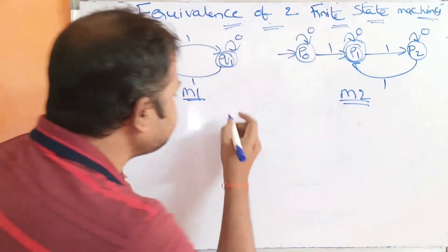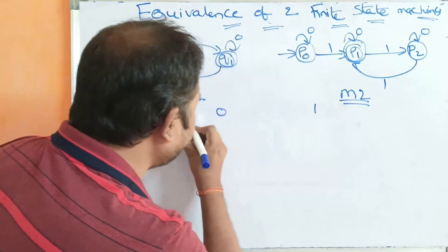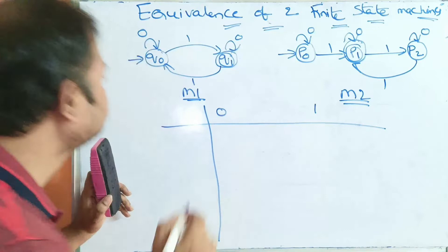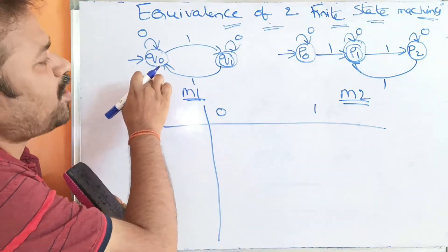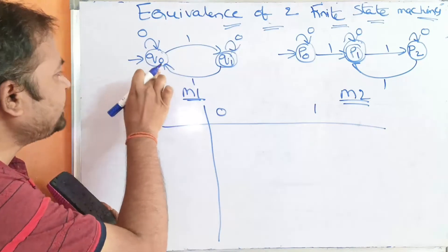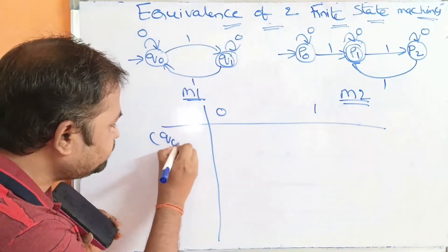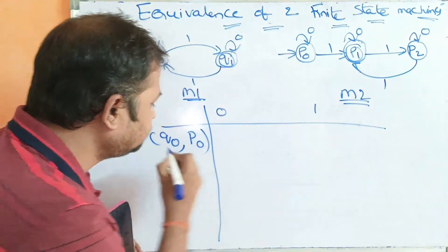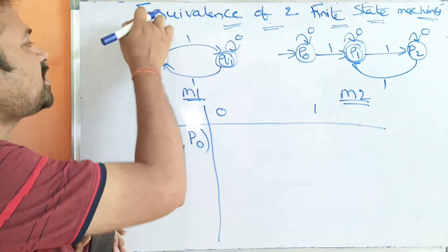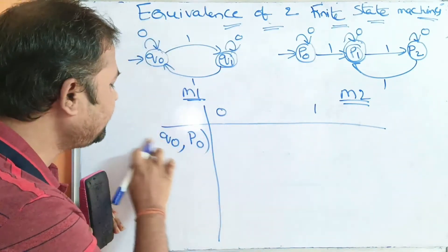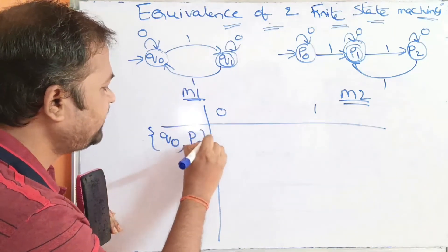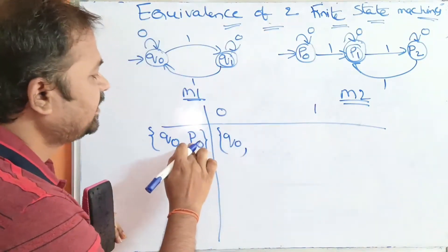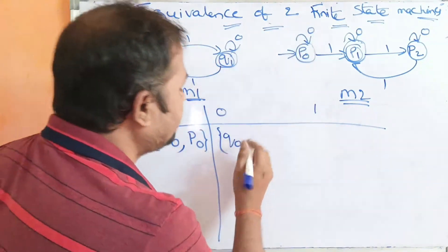Here we have to focus on whether a state is a final state or an intermediate state. In M1, Q1 is the final state and Q0 is the intermediate state. In M2, P1 is the final state and P0 and P2 are intermediate states. The input symbols are 0 and 1. We start by taking the initial state of both machines: Q0 is the initial state of M1 and P0 is the initial state of M2. Q0 on 0 gives Q0, and P0 on 0 gives P0.